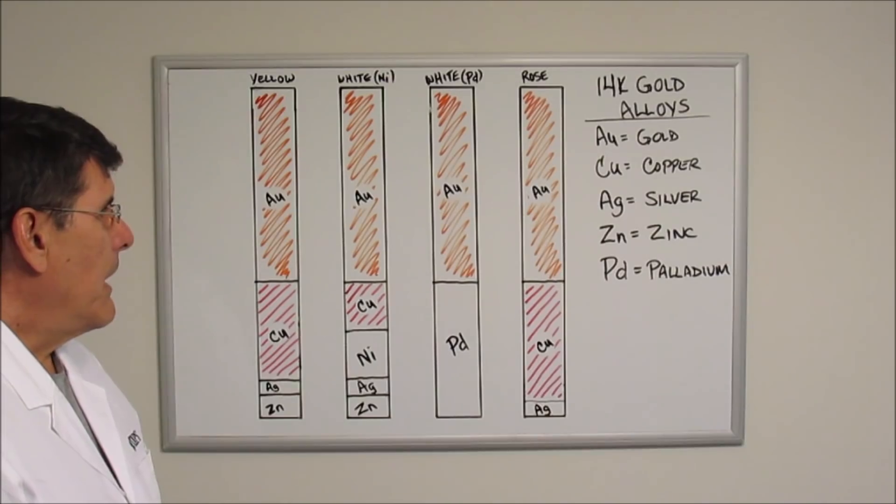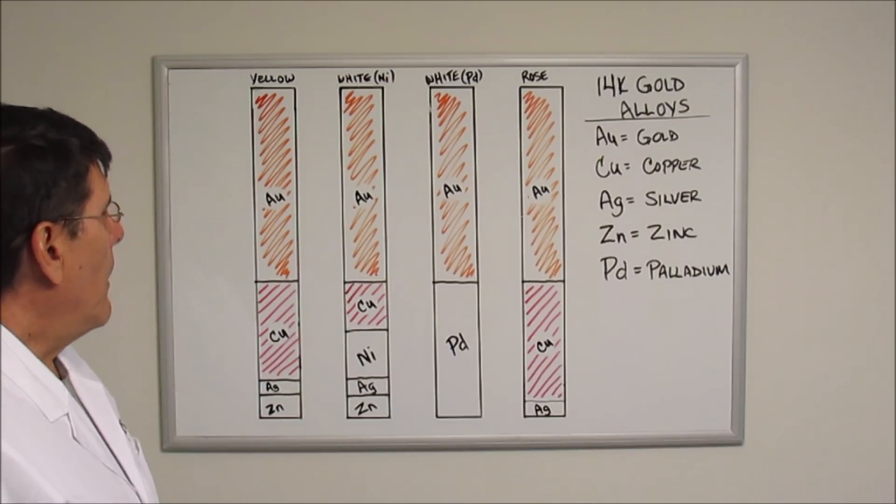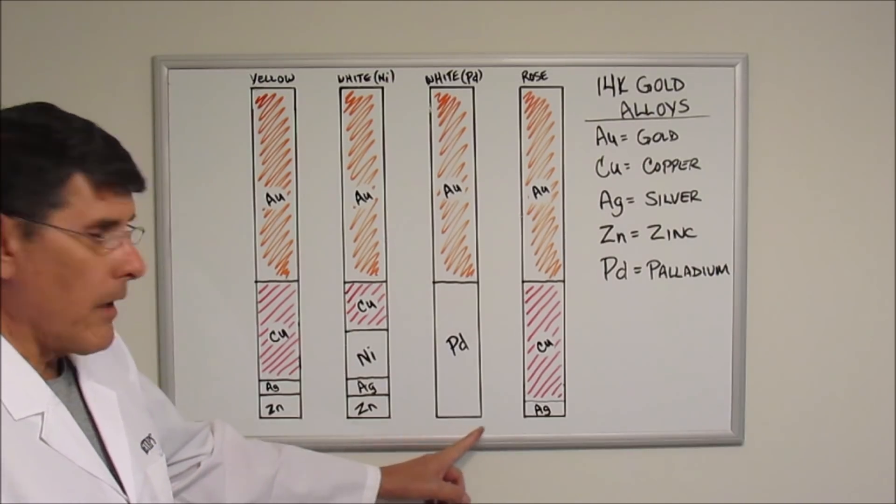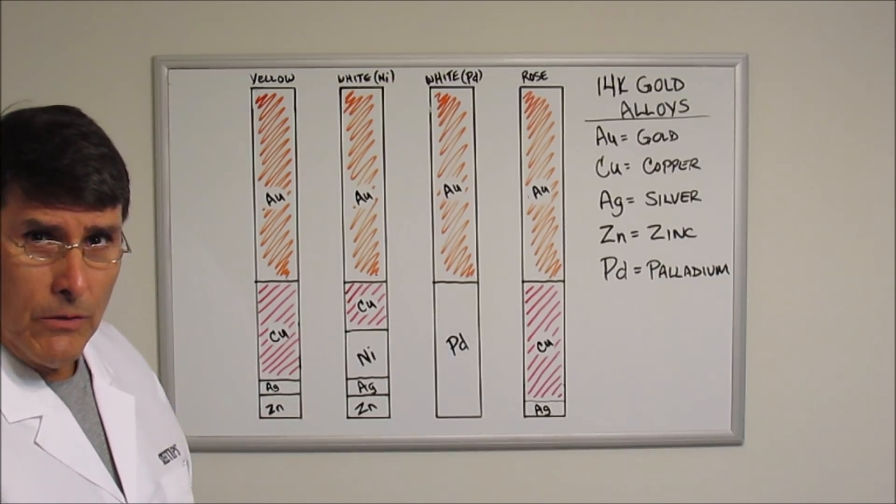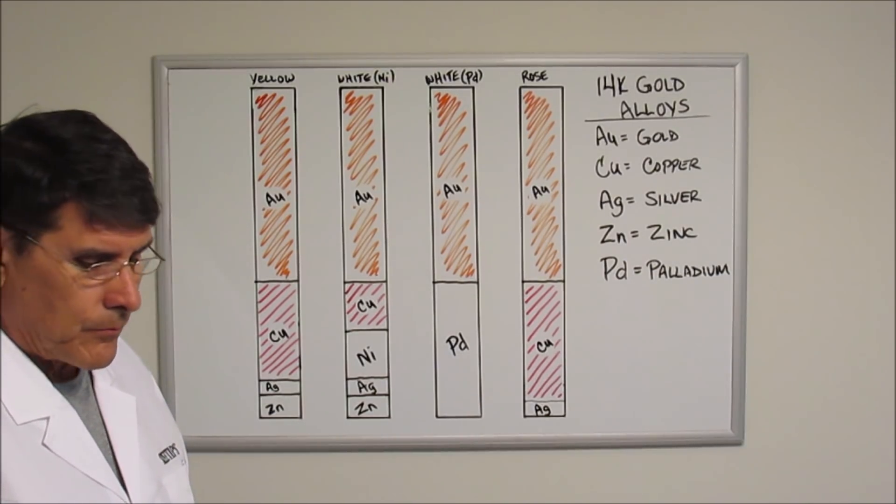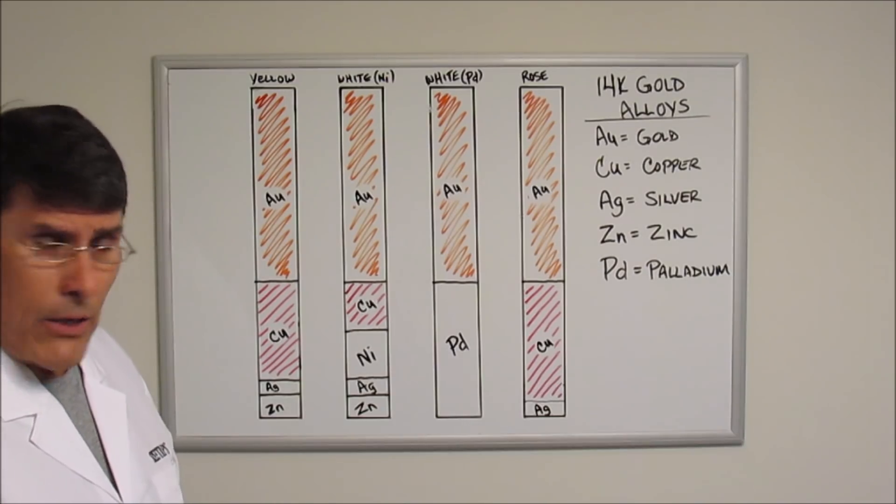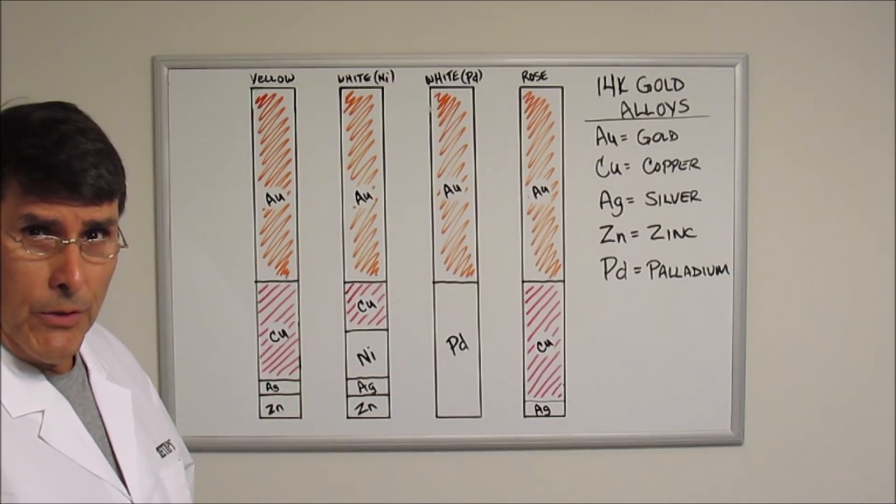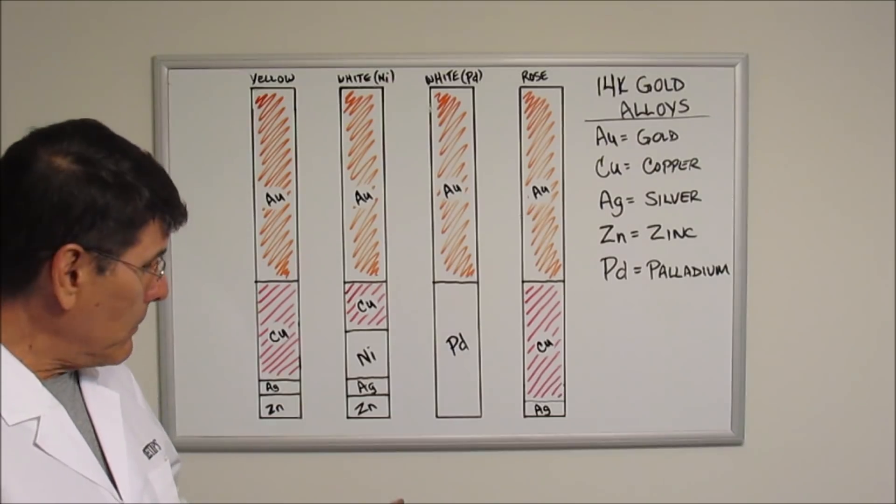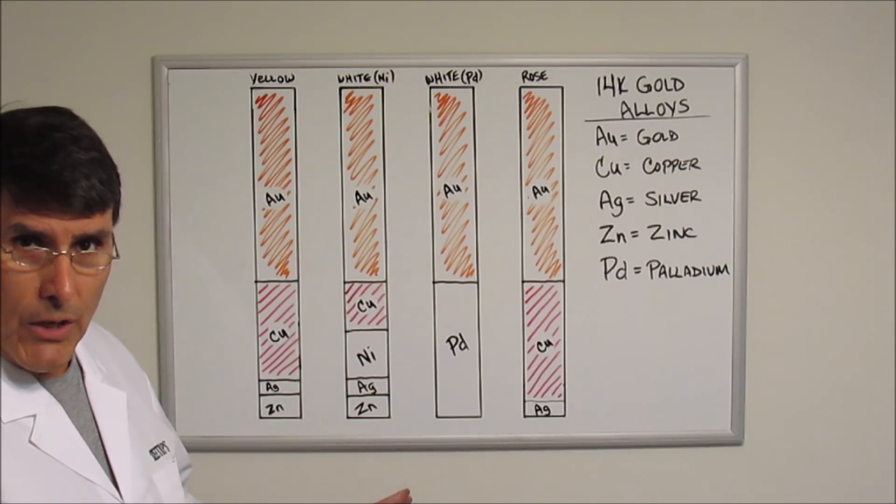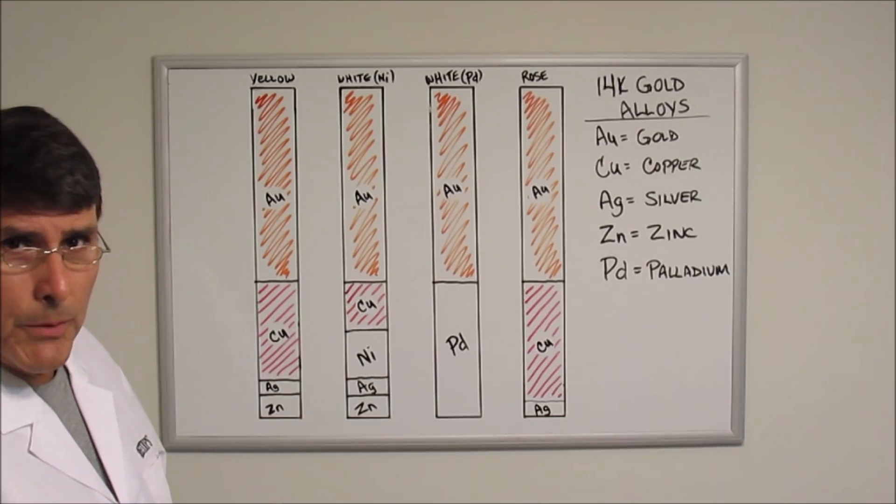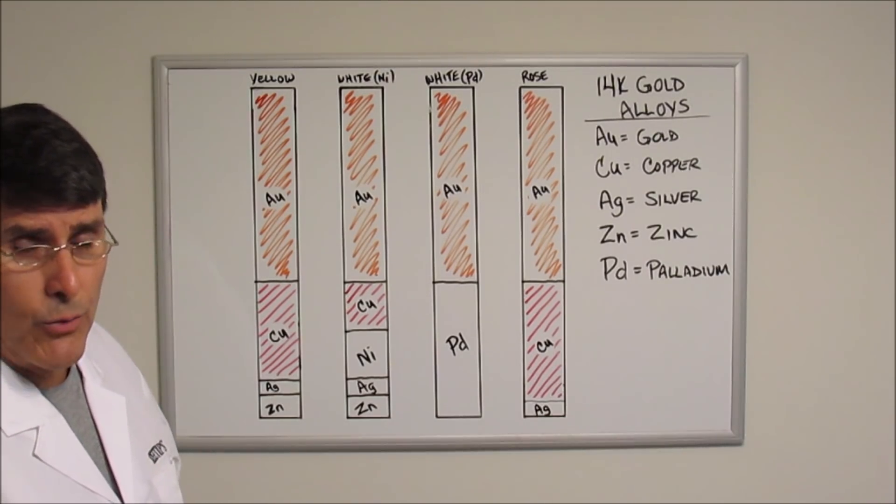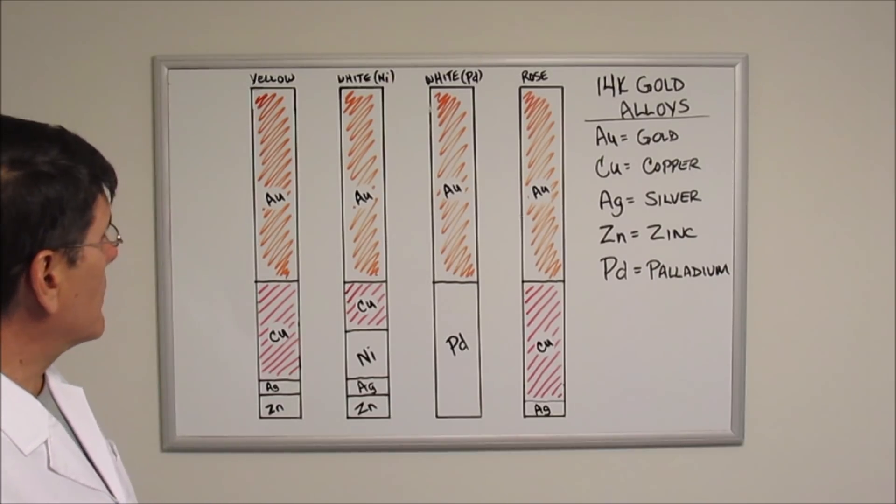Here I've prepared a chart of four different colors of 14k gold. I got this information off the internet. I've never tried to use these formulas to produce any of the alloys that I'm about to show you here. This is just information that I got off the internet, and it's for illustration purposes only.